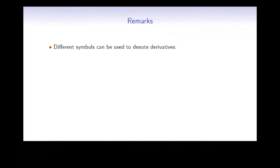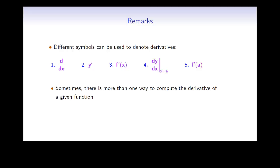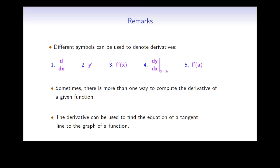Let's summarize. Different symbols can be used to denote derivatives, such as d/dx, y prime, f prime of x, and dy/dx at x equals a, and f prime of a — these both denote the derivative of a function at the point where x equals a. Also, we will see that sometimes there is more than one way to compute the derivative of a given function. Finally, the derivative can be used to find the equation of a tangent line to the graph of a function, and we will see that in one of our next examples.